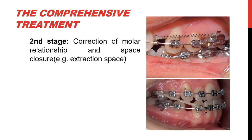The second stage involves correction of molar relationship as well as space closure — for example, spaces that occur as a result of extraction. In the upper picture we can see that a closed coil spring is used to retract the anterior segment. In the lower picture, class 3 elastics are used to close the extraction space in the lower jaw and correct the molar relationship.